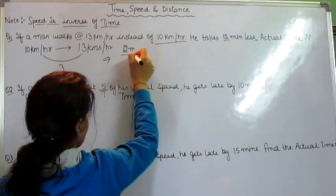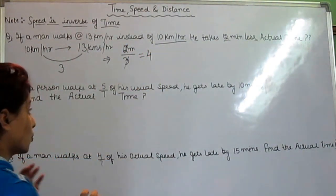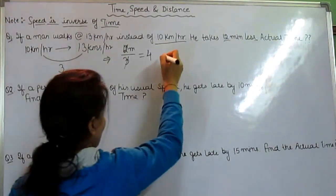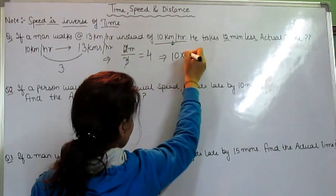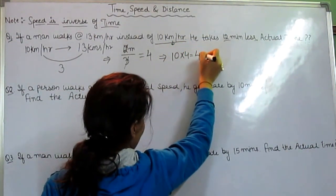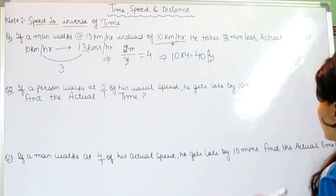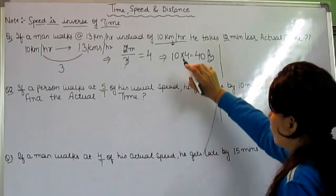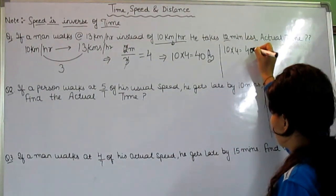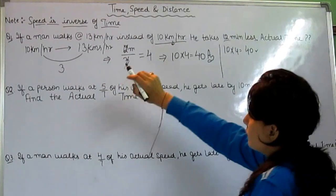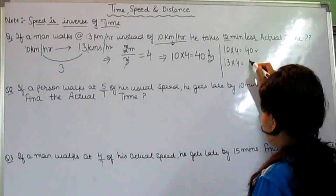We divide 12 minutes by the gap of 3, and we get 4. The actual time is 10 multiplied by 4, which equals 40 minutes. To check: at 10 km/h for 40 minutes, and at 13 km/h for 52 minutes — wait, the gap is 12 minutes, so the answer is confirmed correct.